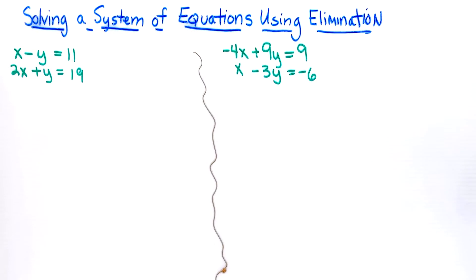This lesson is solving a system of equations using elimination. You'll see that we have two equations here. They're related, which means that there will only be one solution that will make x and y true for the value of the equation for the first one and the second one.